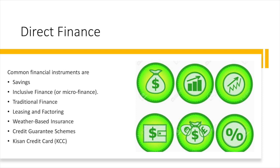Leasing and Factoring are more complex and innovative financial instruments meant for farmers and other entrepreneurs. Leasing is generally used for purchasing farm equipment, automobiles, and machinery used in agriculture. Factoring is when the actor sells its invoices at a discount to improve cash flow. These instruments are used for borrowers who have limited availability of collateral but have a sound credit history.